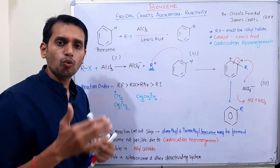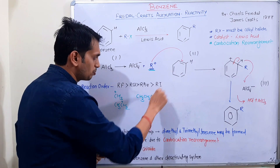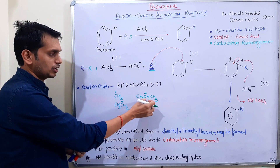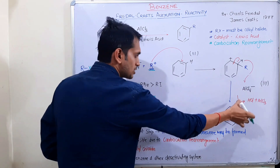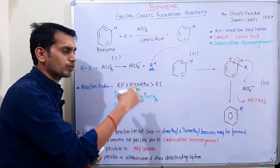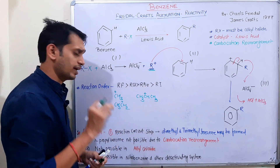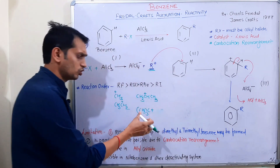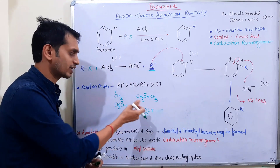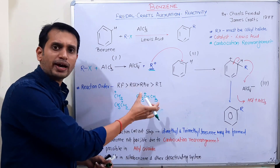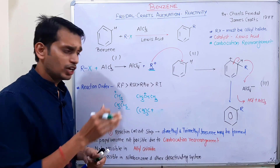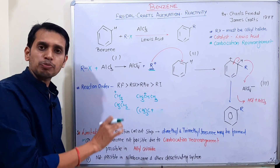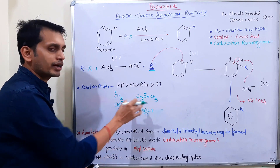Primary carbocation unstable ہوتا ہے اس لیے rearrangement ہوگی — secondary carbocation زیادہ stable ہوتا ہے primary سے، تو shifting ہوتی ہے اور secondary carbocation بنتا ہے۔ یعنی CH(CH₃)₂ بنے گا جو isopropyl ہے۔ اس کا مطلب: N-propyl یا N-butyl benzene بنانا ممکن نہیں — کیونکہ rearrangement ہوتی ہے — یہ دوسری limitation ہے۔